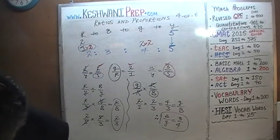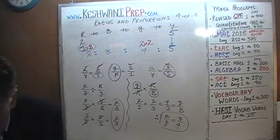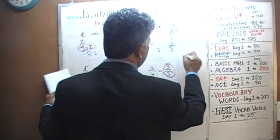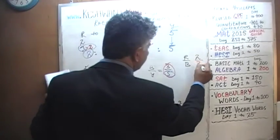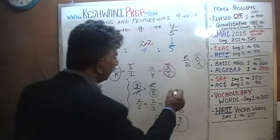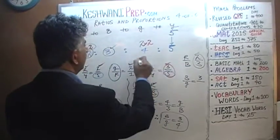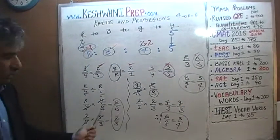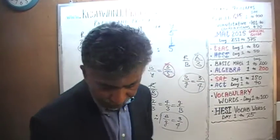Now we can answer anything they ask. The first question: what's the ratio of red to blue? We have 2 reds and 3 blues — so 2 to 3. That's exactly what we found with the classical method. The second question: blue to green? We have 3 blues and 4 greens — 3 to 4. Done. You can do all that work before, or you can do it this way in a matter of seconds.